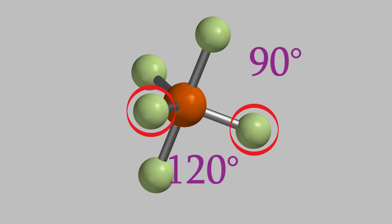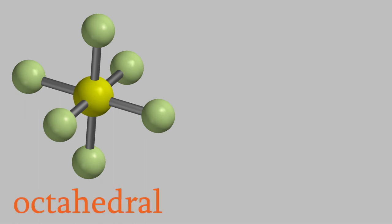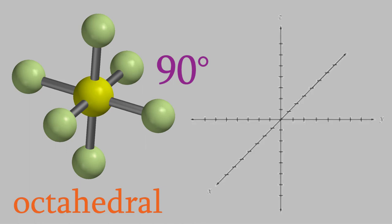We'll look at one more shape now — the one where there are six bonds on the central atom, as in sulfur hexafluoride. This is called an octahedral shape, and the angle between each of the adjacent bonds is just 90 degrees. If you've taken a geometry class, you'll recognize that this looks similar to the x, y, and z axes in the Cartesian coordinate system.